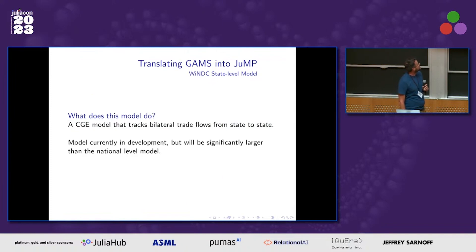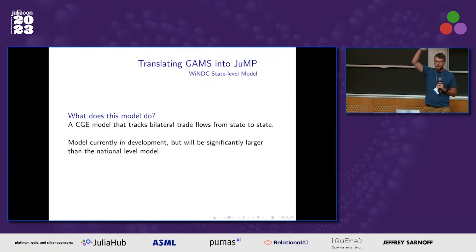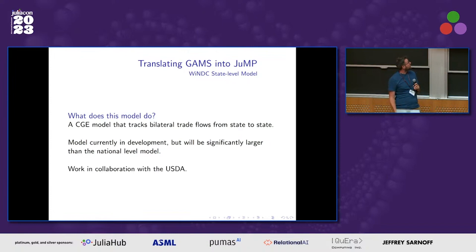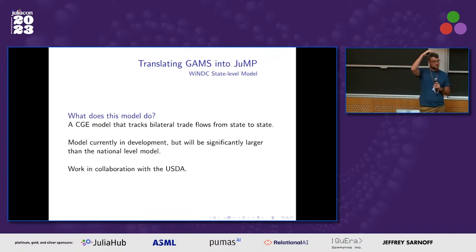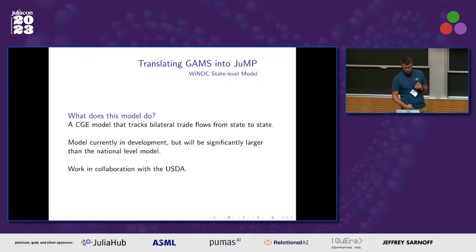A slightly bigger model is the state-level model, which tracks flows from state to state — for example, dairy in Wisconsin: where does it go? Does it go to agriculture in Minnesota? Obviously this model is going to be a lot bigger — at least 50 times bigger, probably far more. We also take the national categories and disaggregate them: by default it's just 'agriculture,' but Wisconsin and USDA are interested in dairy, wheat, and soy specifically, so we break those up. That's where the majority of our work is.